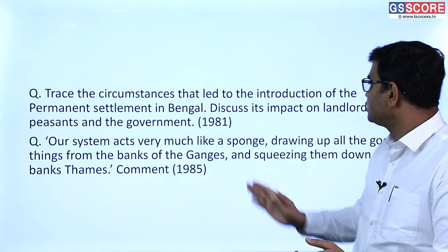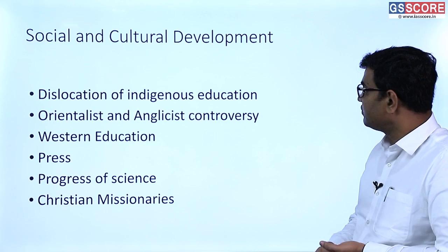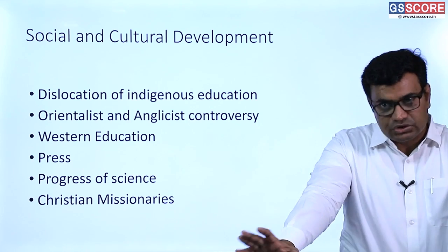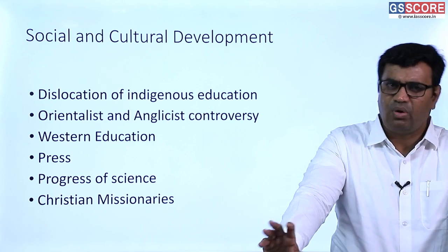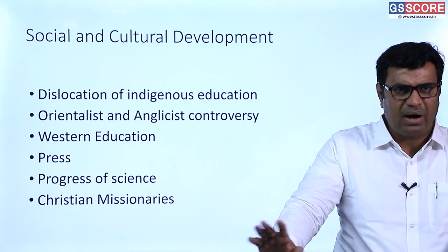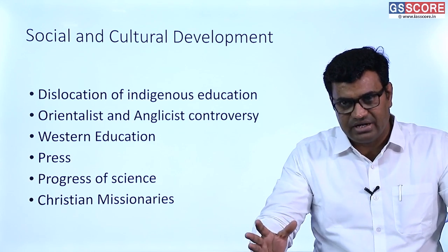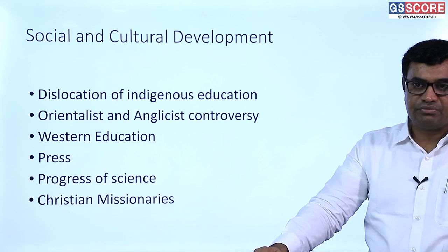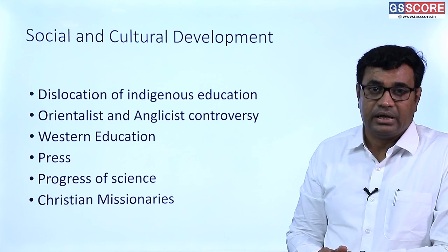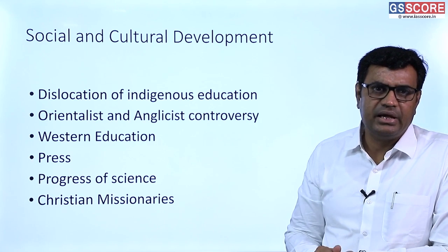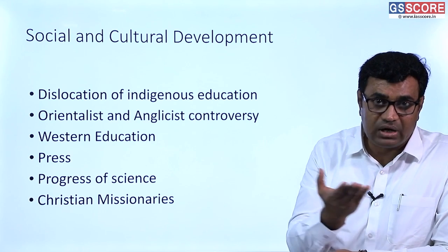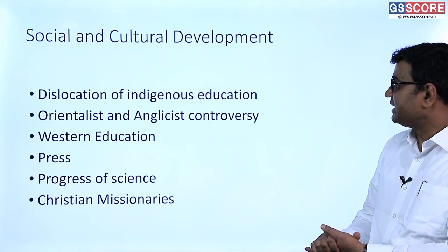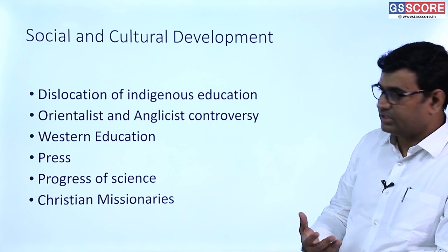Moving to the fifth topic: social and cultural developments. First, the dislocation of indigenous education — the Orientalist-Anglicist controversy and western education. When British came to India, they initially wanted to continue with indigenous education imparted through Sanskrit or Persian. Some British officers established traditional institutions like Calcutta Madrasa and Sanskrit College at Banaras. But with the arrival of the progressive Lord William Bentinck, the need was felt to introduce English education to create a lower cadre of British Indian officers.